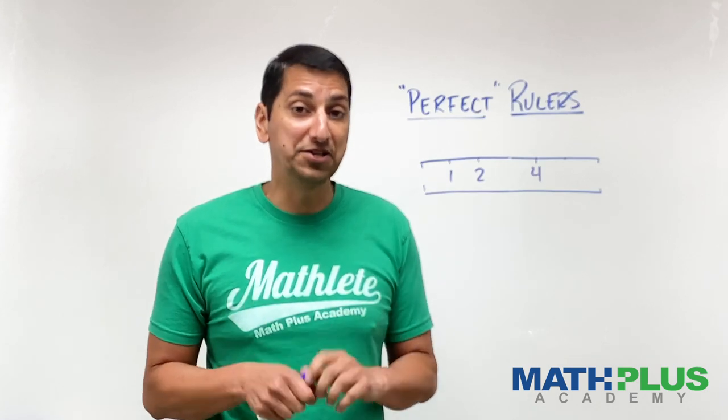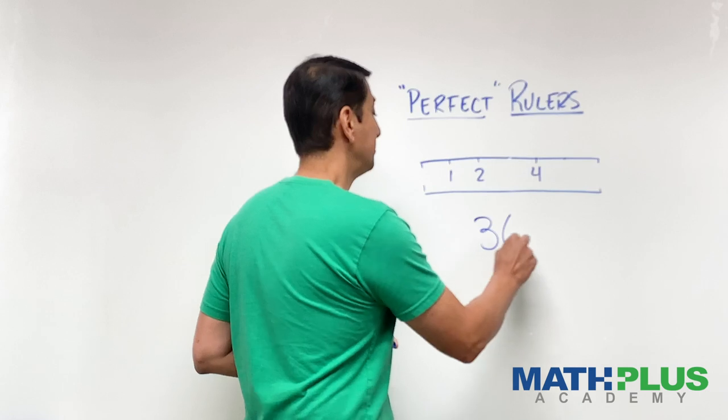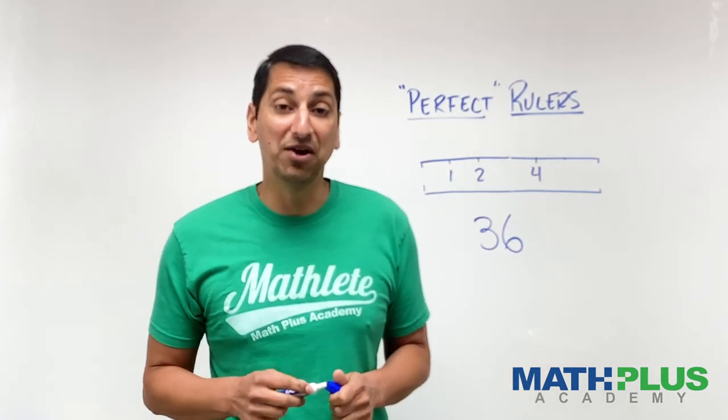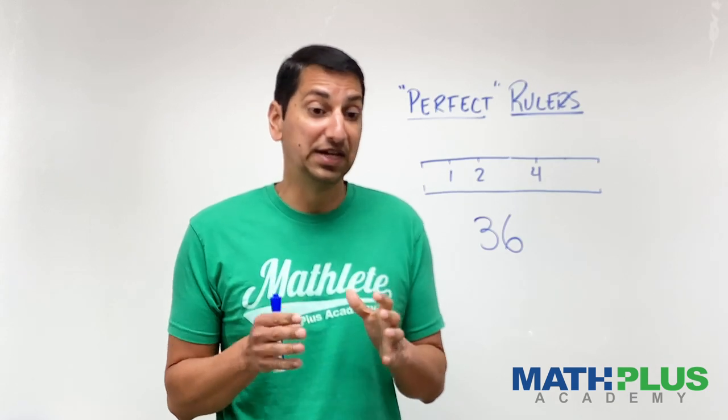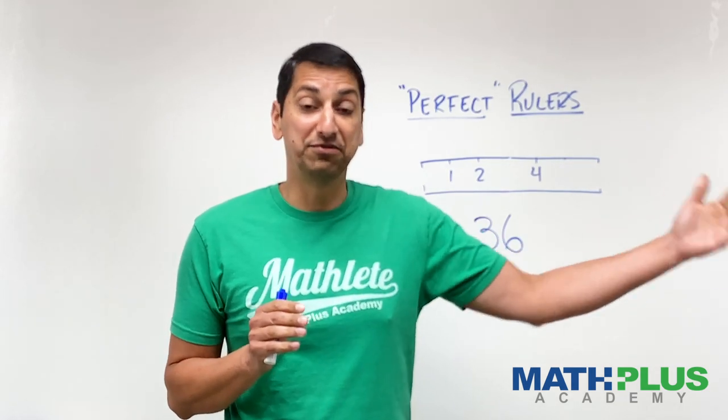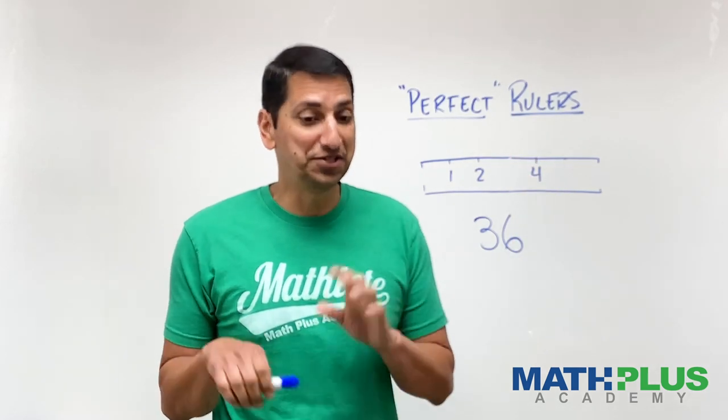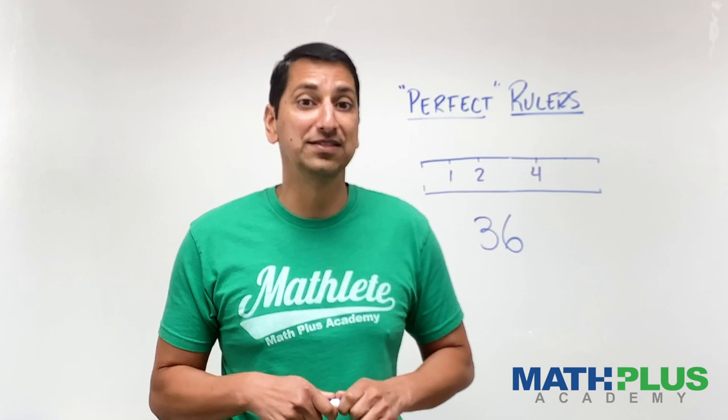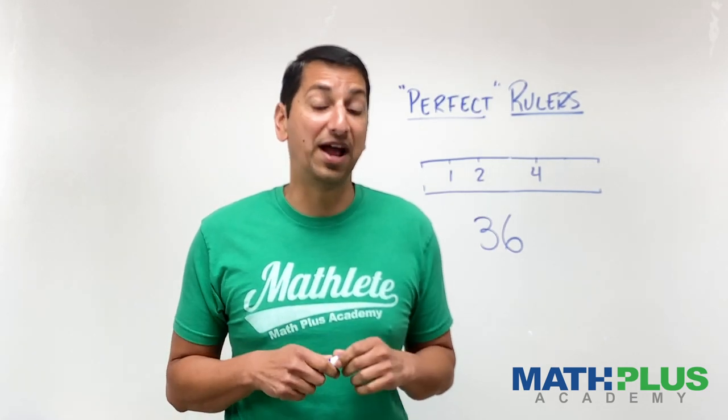Then, I want you to try the 36 inch ruler and see if you can figure out what are the fewest number of marks needed to measure something on that ruler that's one, two, three, all the way up through 36 units long. That's a really fun, challenging problem. You'll discover a lot of different things, and it'll take a little bit of creativity and perseverance to figure that out.